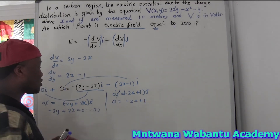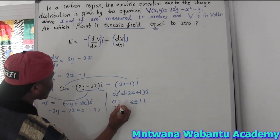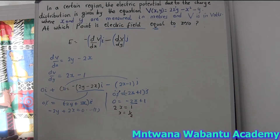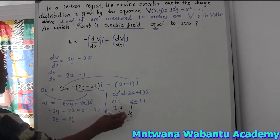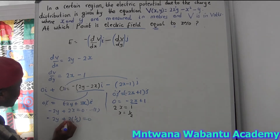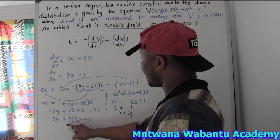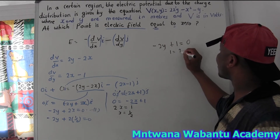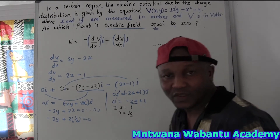From the j-hat equation, we can get the value of x. Taking the term over: positive 2x equals 1, so x equals one-half. Now substituting x equals one-half into equation one: negative 2y plus 2 times one-half equals 0. The 2 and 2 cancel giving negative 2y plus 1 equals 0, so 1 equals 2y, and y equals one-half.